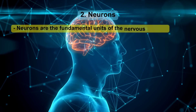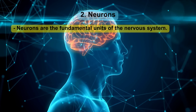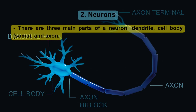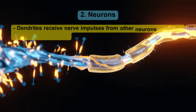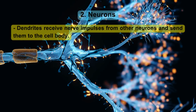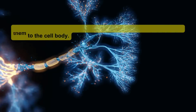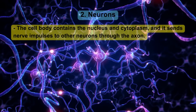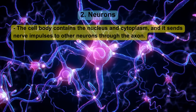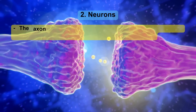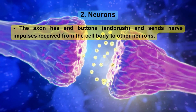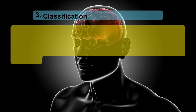Neurons are the fundamental units of the nervous system. There are three main parts of a neuron: dendrite, cell body (soma), and axon. Dendrites receive nerve impulses from other neurons and send them to the cell body. The cell body contains the nucleus and cytoplasm, and it sends nerve impulses to other neurons through the axon. The axon has end buttons and end brush, and sends nerve impulses received from the cell body to other neurons.